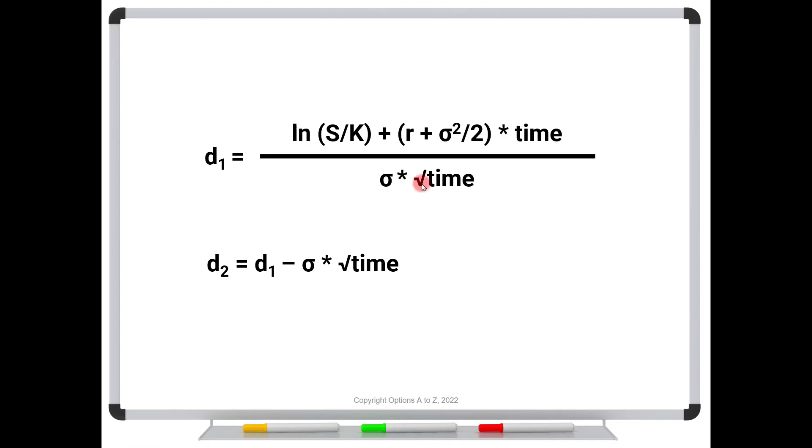Time would be expressed in years. Divided by the volatility times the square root of time. It's a long formula, but it's actually quite easy to plug in numbers and get this number over here. And once we have that one, this one's fairly easy. It's just this number subtracting off this denominator. And those are the two inputs that you need. So here's an example.